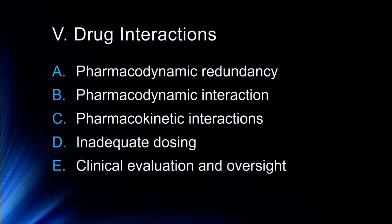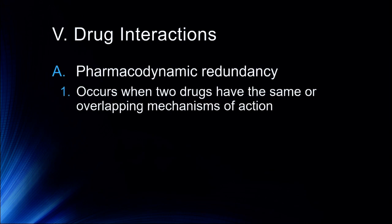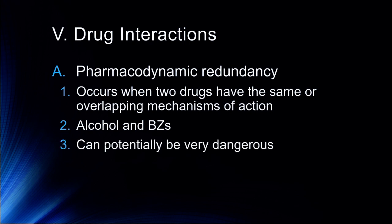To round out our discussion of efficacy and safety, let's talk about drug interactions. We'll start with pharmacodynamic redundancy, which occurs when two drugs with the same or overlapping mechanisms of action are given to the same patient — for example, being on two beta blockers. Alcohol and benzodiazepines have pharmacodynamic redundancy — they both have effects on the GABA system and can inhibit things like consciousness and breathing. Because they affect the same neurotransmitter systems, taking those drugs together can be potentially very dangerous.